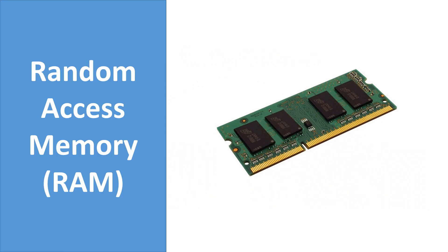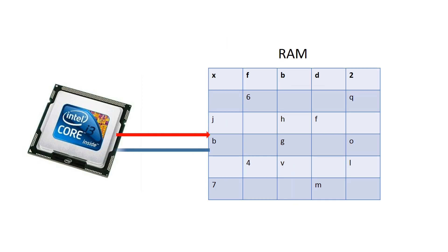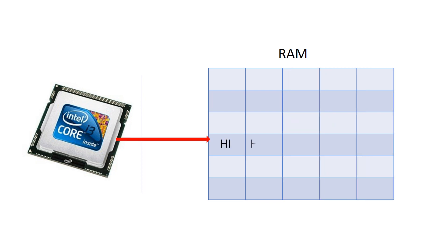Random access memory is used to store the programs and data being used by the CPU. The data on the random access memory can be read, written, and erased any number of times.